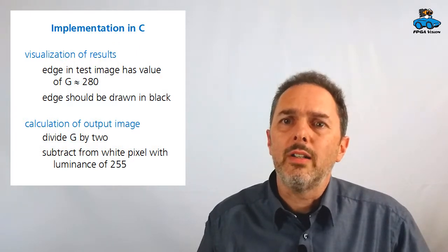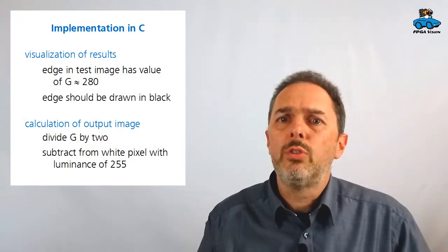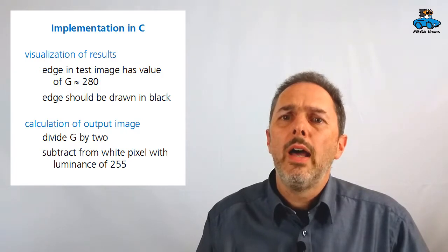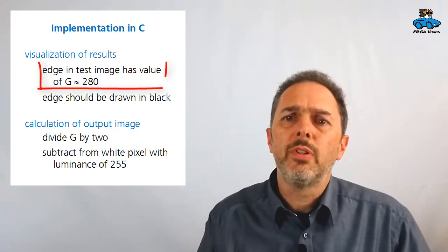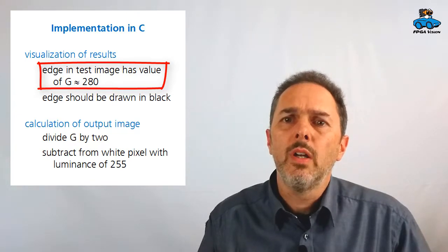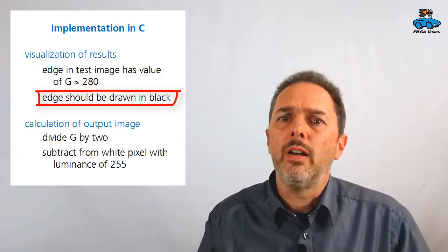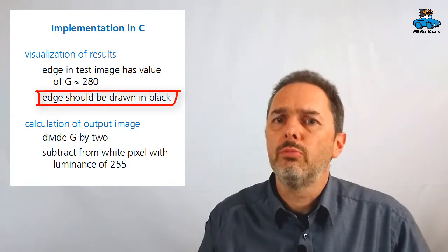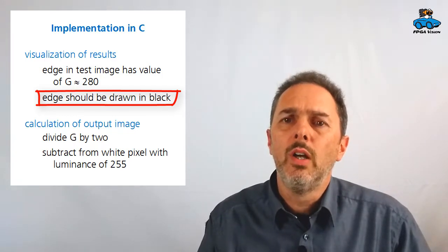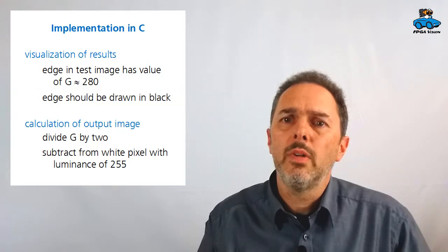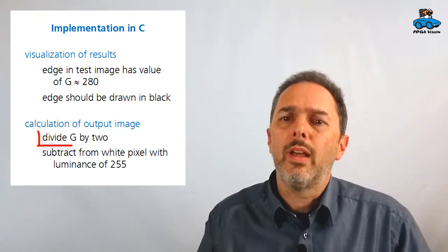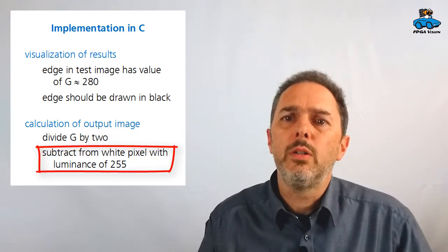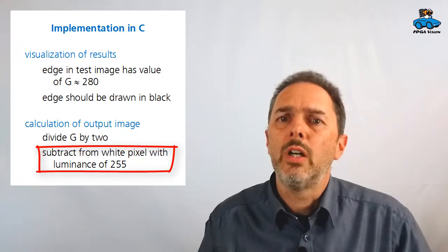To visualize the results, we want to have an image of the edges in the street scenes that we're seeing. As we saw, a typical value would be something like 280. We want edges to be visible as black, and where we have no edges, we want to have a white pixel at this position, because this gives a nice image to check the algorithm. Therefore, we calculate an output pixel. We divide G by a factor of 2, and then subtract this value from the white pixel, which would have a value of 255.